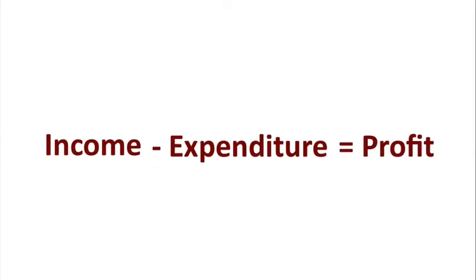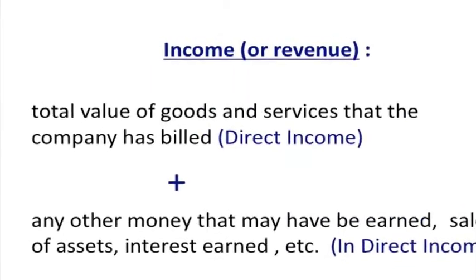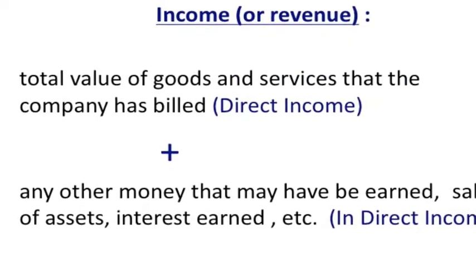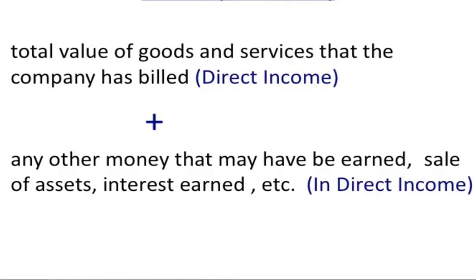Let us now understand the meanings of income, expenditure, and profit. A company does business through documents known as invoices or bills. Income is nothing but a consolidation of all the sales the company has made, or all the revenue it has earned, plus revenue earned through other means like selling of assets or income from financial investments such as shares or fixed deposits. The sum total of all money earned during the period comes under income.